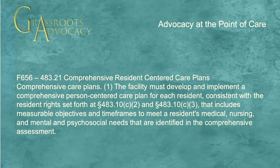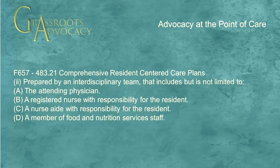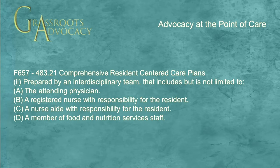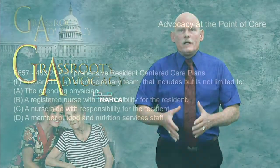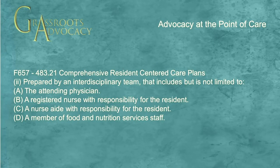In other words, we need to set it up so that by doing X, Y, and Z, we achieve an improved outcome by a particular date. The new regulation goes a bit further — if we look at FTAG 657, it actually redefines the interdisciplinary team, which is a group of people who get together to create individualized person-centered care plans. Probably the newest piece of the regulation is that a nursing assistant with responsibility for the resident being care planned must be on the care plan team, and that is something kind of new for us.